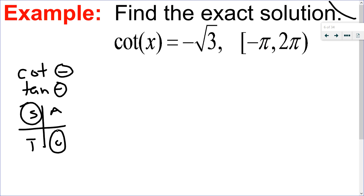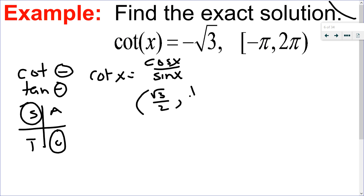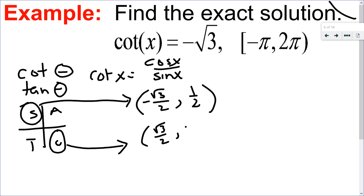Now that I know the quadrants, I need to find my reference angle. Cotangent is the ratio of cosine over sine, which is the x-coordinate over the y-coordinate. So I'm looking for a coordinate on the unit circle that has √3/2 for cosine and 1/2 for sine, because cosine over sine gives √3. In quadrant 2 the coordinates would be (-√3/2, 1/2), and in quadrant 4 they would be (√3/2, -1/2).